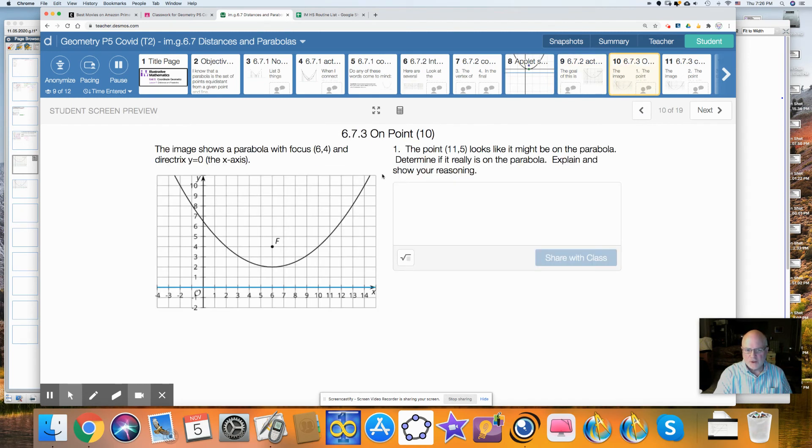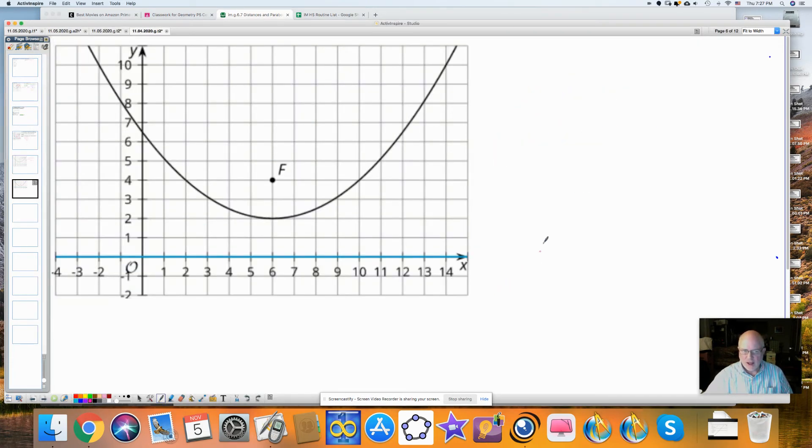On point. So this image shows a parabola. Focus is (6, 4). The directrix is y = 0, which is the x-axis. The point (11, 5) looks like it might be on the parabola. Determine if it really is and show your explanation. So if I were looking at this casually, I might say, oh yeah, that's on there. But I'm not going to do that. I'm going to look at it with the Pythagorean theorem in mind. Because it looks like it might be 5. This looks like it might be 5, but this distance is 5, and this distance is 1. When I do a² + b² = c², I get 5² + 1² = c². Or c = √26, which is like a little bit more than 5. It's just a smidgen more than 5.